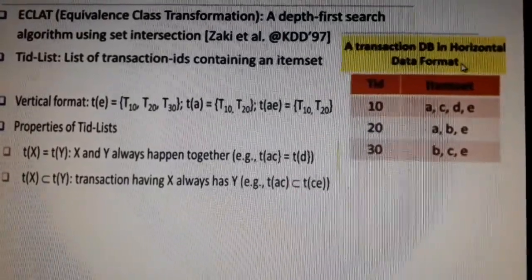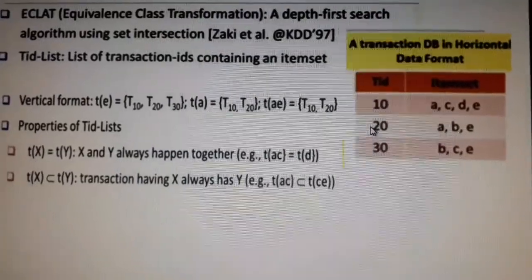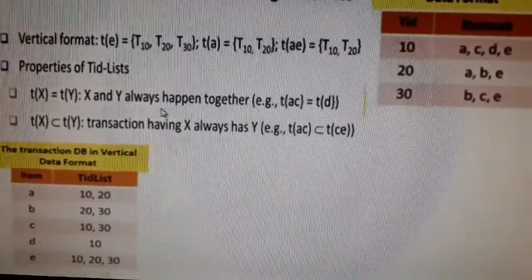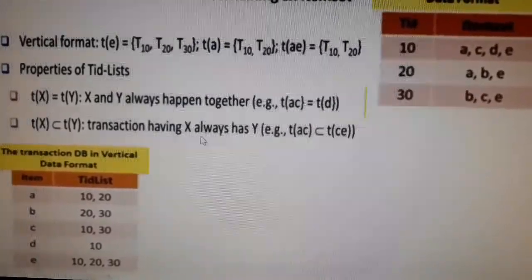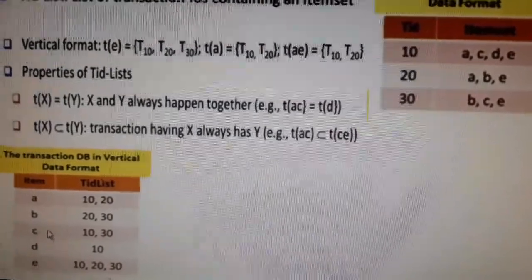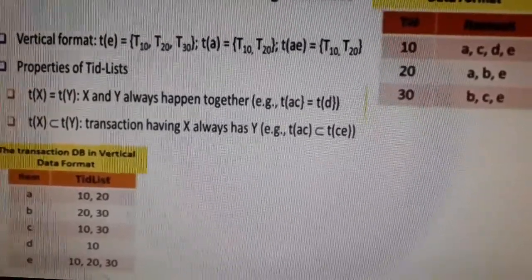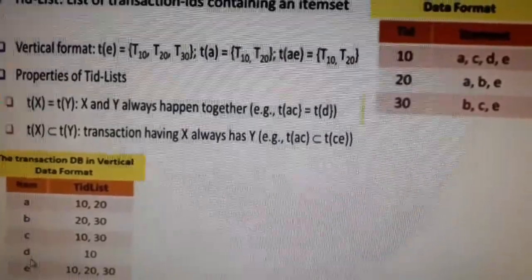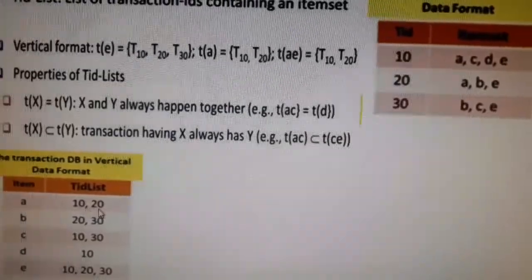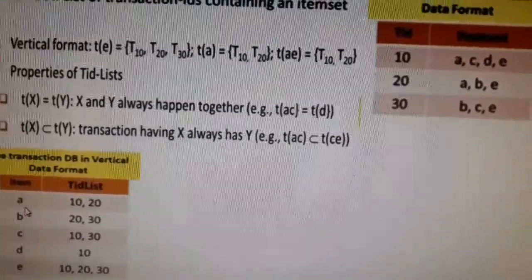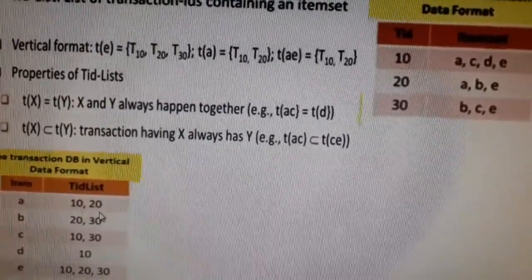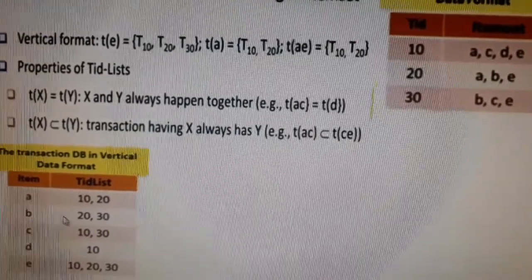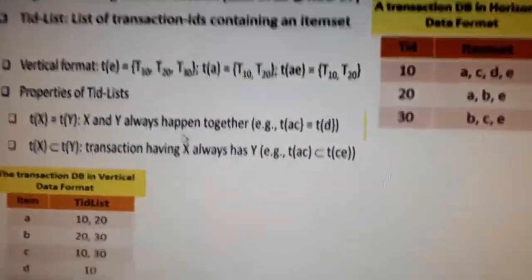In ECLAT, we change the format slightly. Those earlier formats work under the category of horizontal data format, but here we change it into vertical data format. In this format, the TID — transaction ID — comes to one side, and we list out items in the first column. You can see all the individual items that were previously in separate rows.